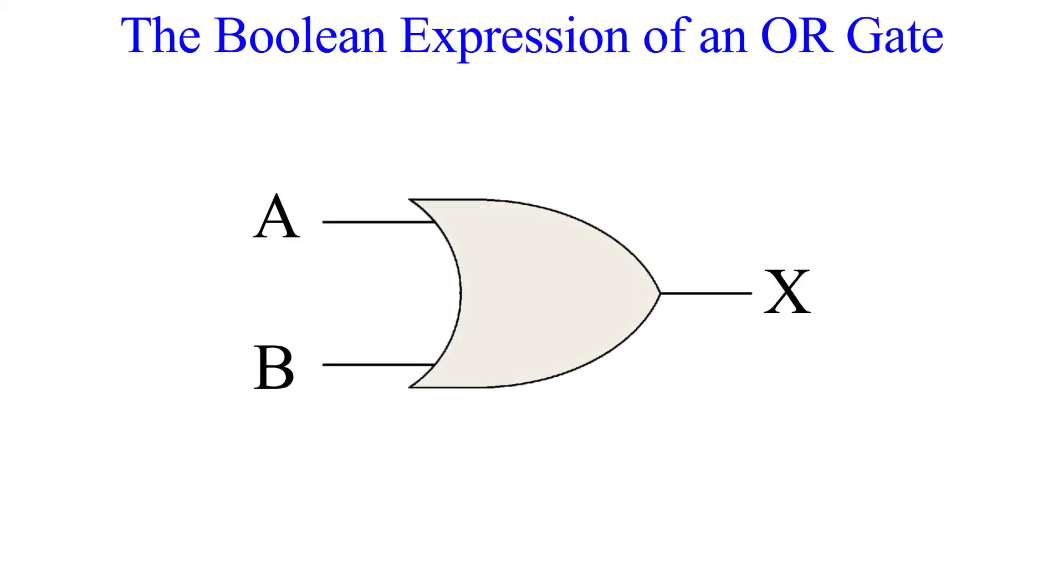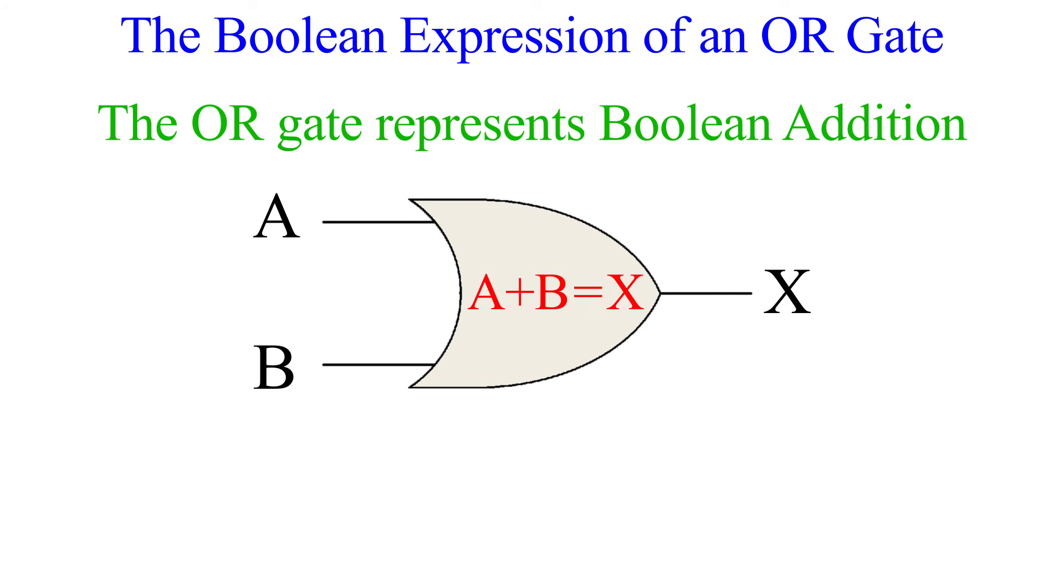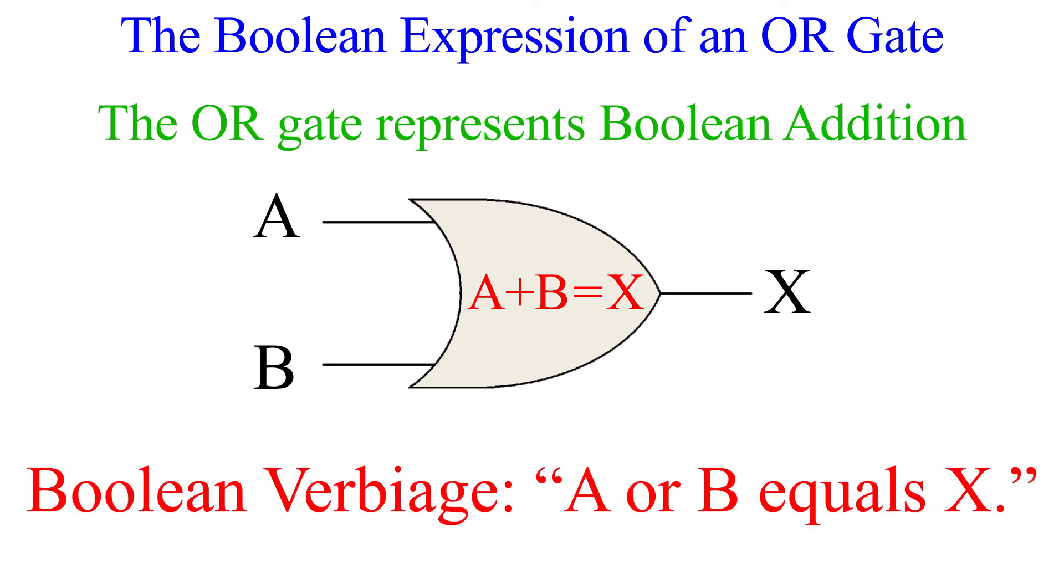Getting a jump start on unit 4, we're now going to look at the OR gate as a boolean expression. In Boolean algebra, the OR operation is Boolean addition. The plus sign is used to represent this operation just like in regular algebra. In Boolean algebra, however, instead of saying A plus B, we will say A OR B.